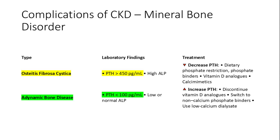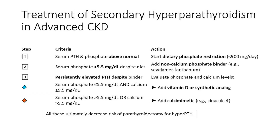In adynamic bone disease, PTH is around 100, so treatment involves increasing PTH by discontinuing vitamin D analogs and using non-calcium phosphate binders.